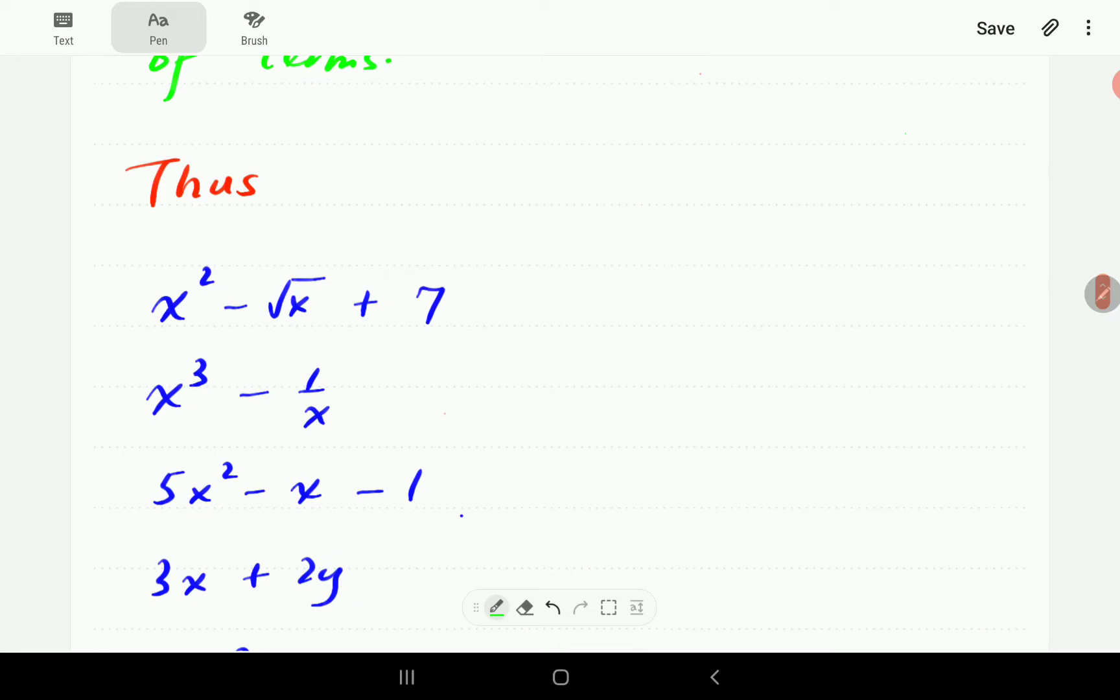So here are some examples. We have got in the first instance here, x squared minus square root x plus 7. This one can be a polynomial term. This one cannot, because square root x, if we write it as a power, is x to the power one half.